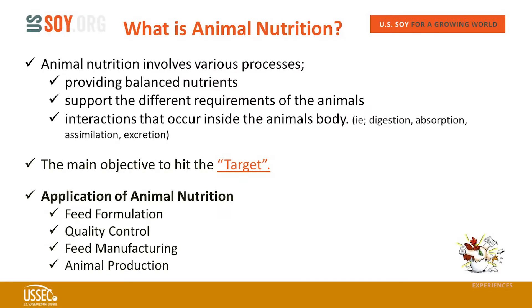absorption, assimilation, and excretion. The main objective is really to find the balance of getting the optimum performance from those nutrients. When we talk about animal nutrition, we don't think only of feed formulation — animal nutrition should be part of all other processes involved in the production of quality feeds, starting from quality control parameters, feed formulation, processing, and up to animal production.